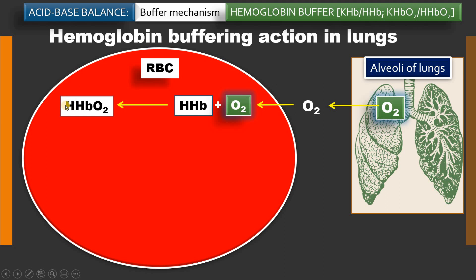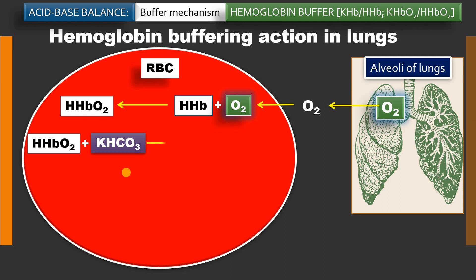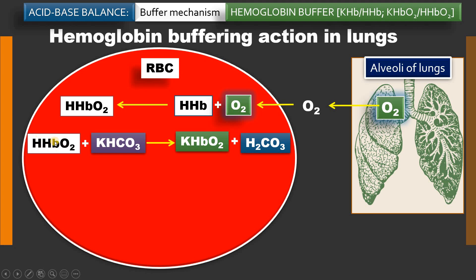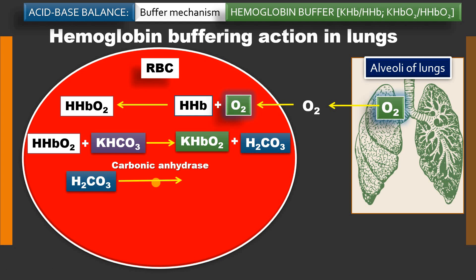Oxyhemoglobin has an extra proton — it is a strong acid. This oxyhemoglobin immediately dissociates, and its protons are buffered by the bicarbonate — potassium bicarbonate — present inside the RBC, generating carbonic acid. So the protons from the strong acid oxyhemoglobin are buffered by bicarbonate inside the RBC, and there is utilization of this bicarbonate. This carbonic acid then, with the help of carbonic anhydrase, dissociates to give water and carbon dioxide.